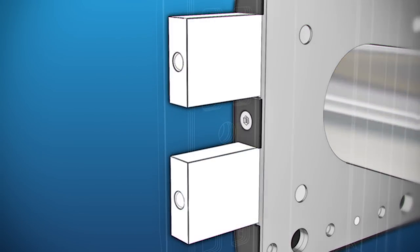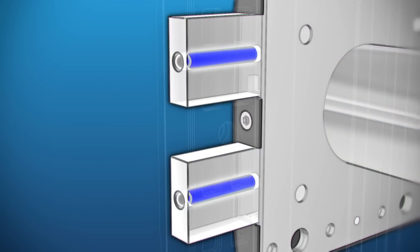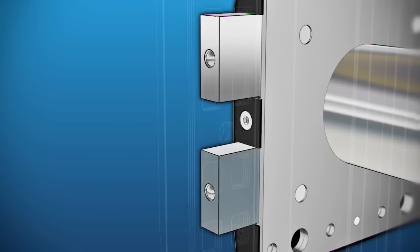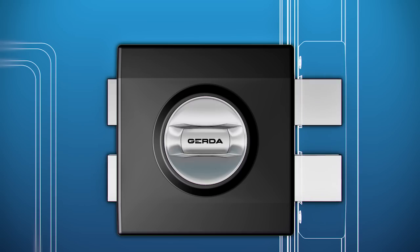Locking bolts extending across the entire lock body are fortified at the core with chrome steel roller bearings making them virtually impossible to saw through.